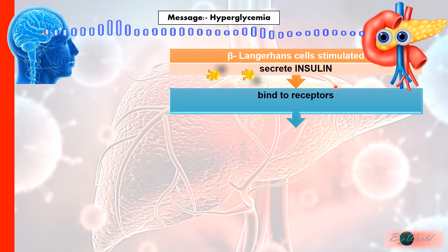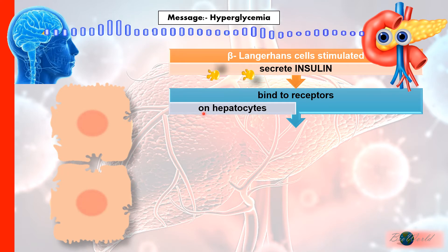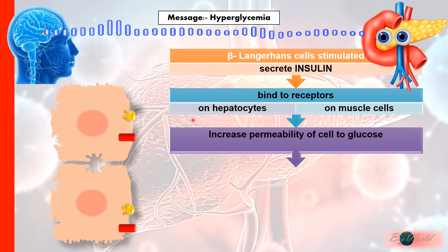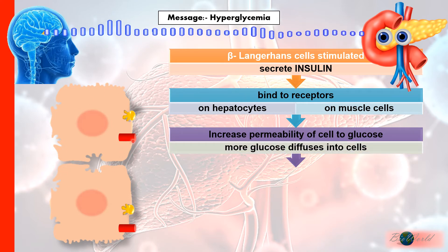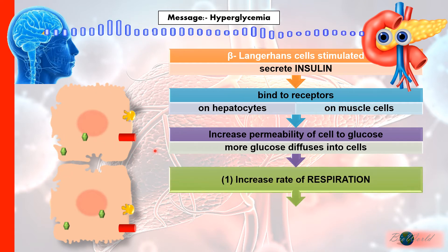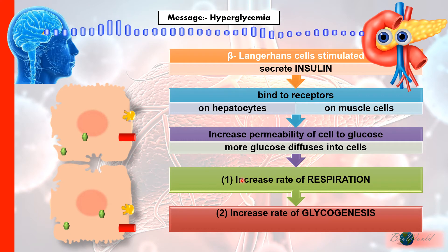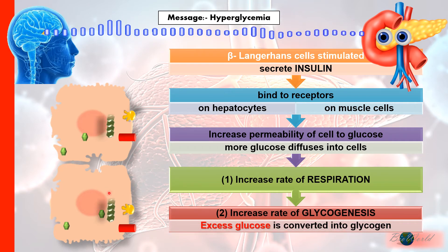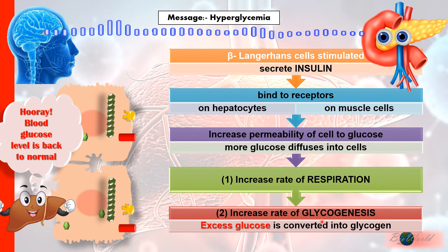Insulin binds to receptors located on hepatocytes as well as muscle cells. When insulin binds to these receptors, it increases the permeability of the cells towards glucose, so more glucose diffuses into the cell from the blood. The cells then use the glucose for respiration, and if there is excess glucose, it is converted into glycogen by the process known as glycogenesis. In this way, the glucose concentration in the blood returns to normal.